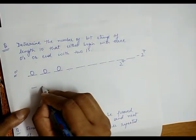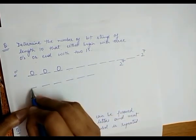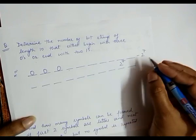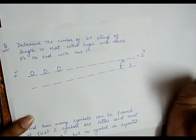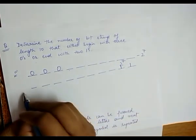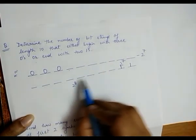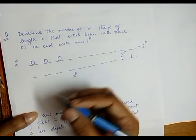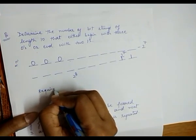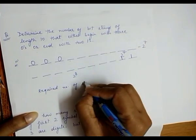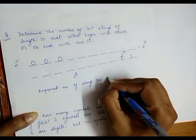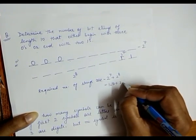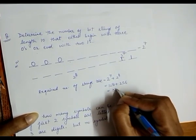For the second condition — the bit string ends with 2 ones — the last two positions are fixed, leaving 8 remaining positions. There are 2 to the power 8 ways to fill those 8 positions. So the total required number of strings is 2^7 + 2^8 = 128 + 256 = 384 ways.